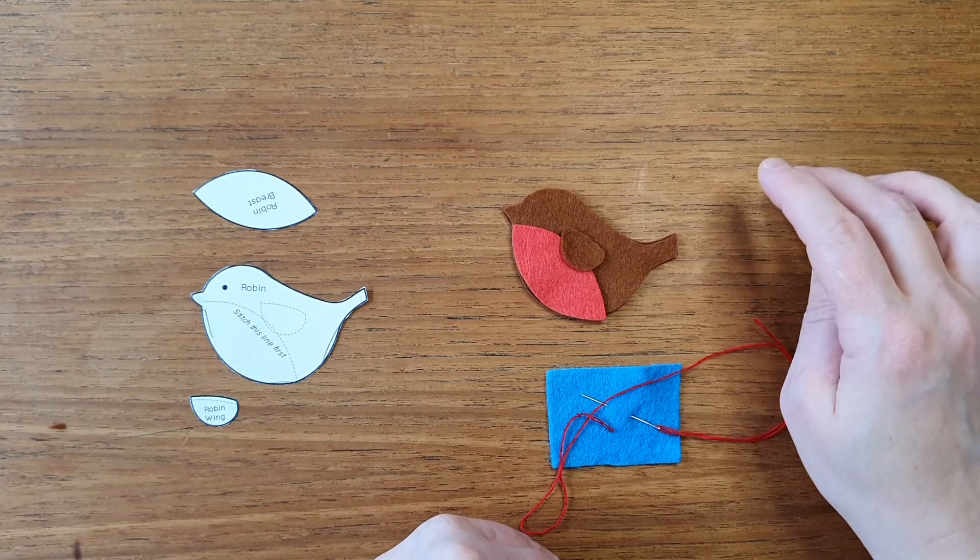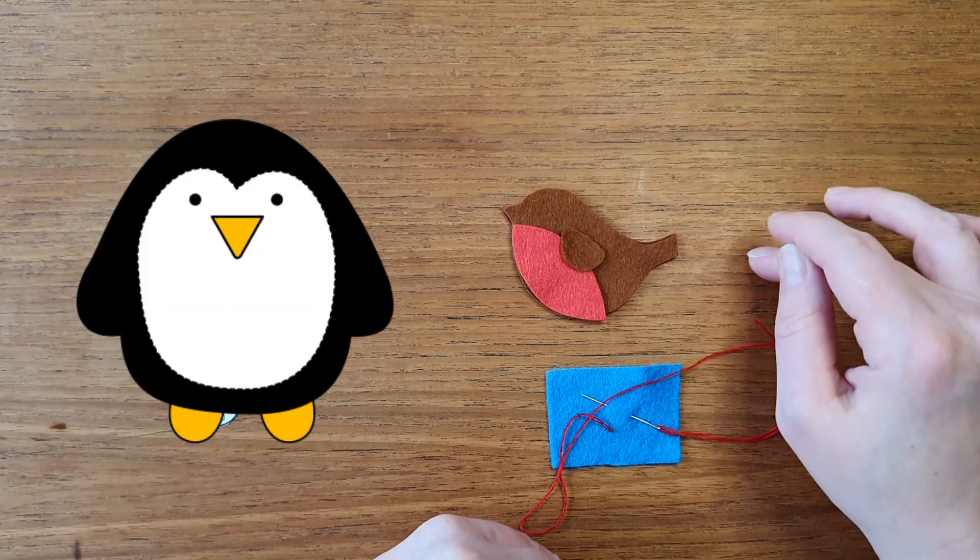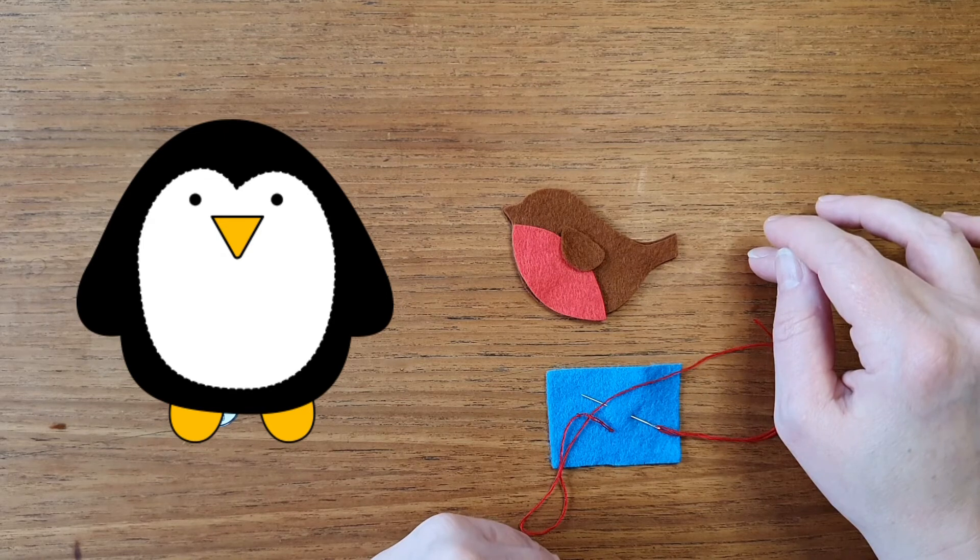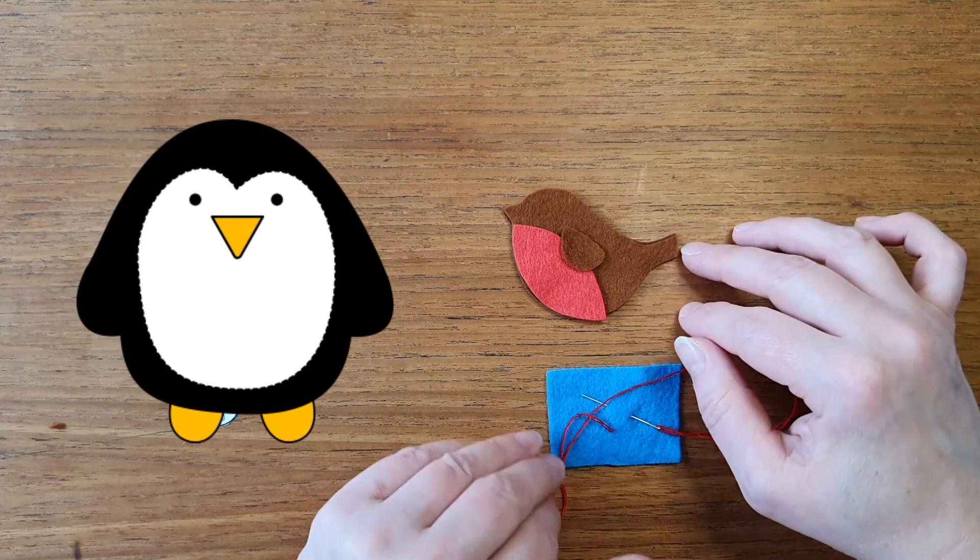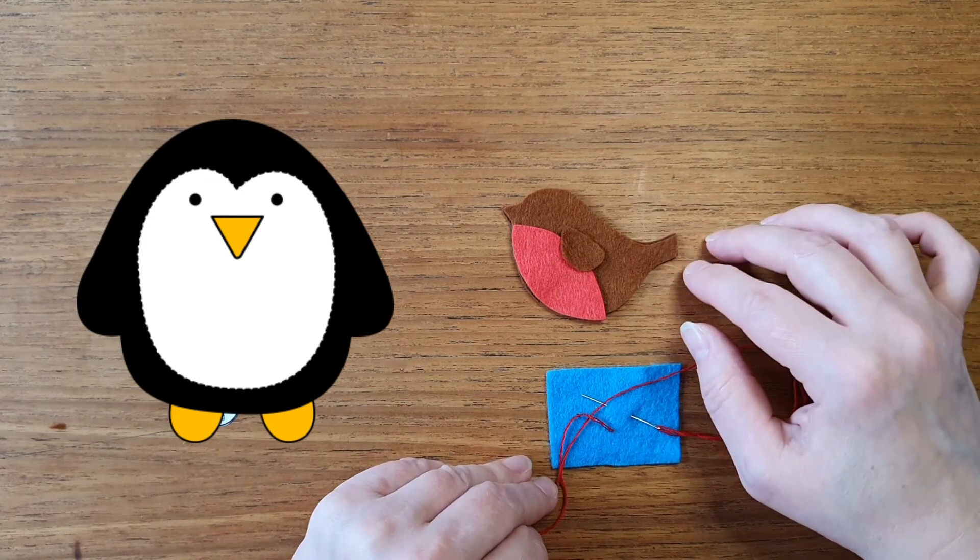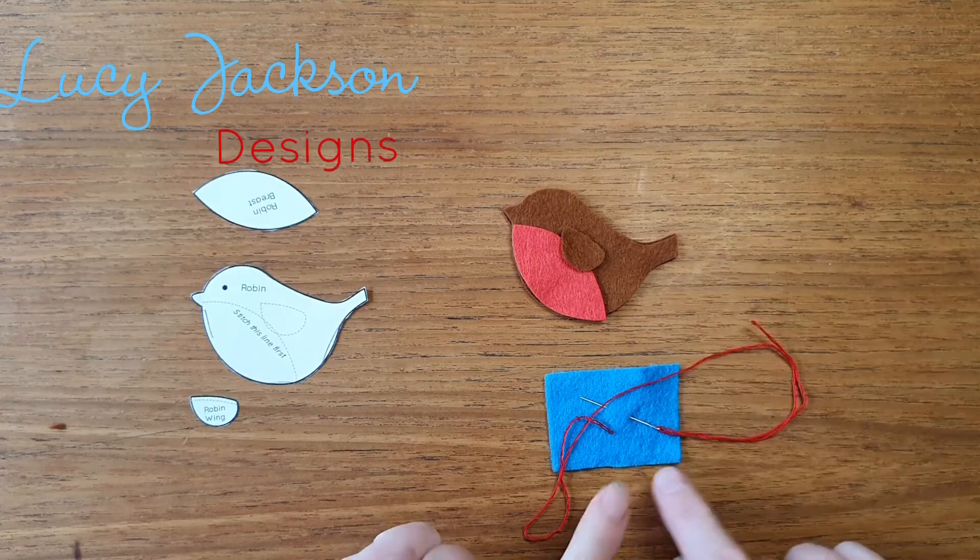It also has eyes and a little beak. So my recommendation for that would be: sew the tummy on first, and then sew the beak and the eyes before you do the whole piece together.